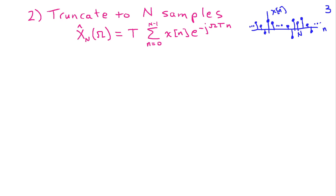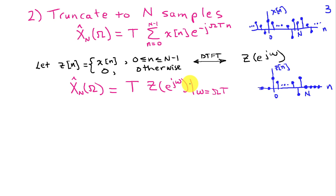The next step is we're going to have to truncate the signal to capital N samples, because we can't evaluate a sum from n equals minus infinity to infinity in a computer. For convenience, we allow this sum to go from 0 to N minus 1. Our quantity to approximate the Fourier transform is T times the sum from n equals 0 to N minus 1 of x of n, e to the minus j omega T times n, with subscript N indicating a length-N approximation. We define a signal z of n equal to x of n on the interval 0 to N minus 1, and 0 otherwise.